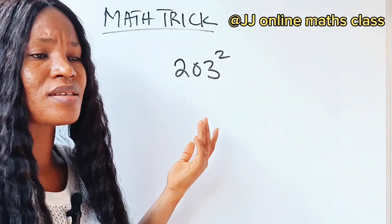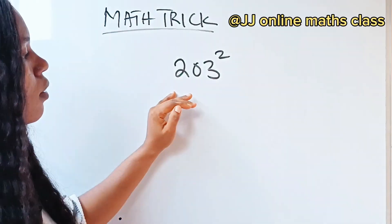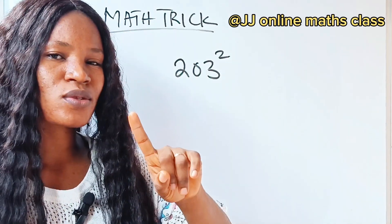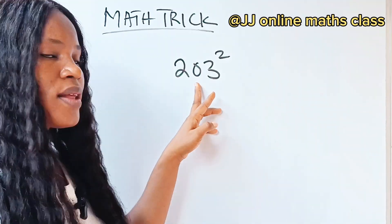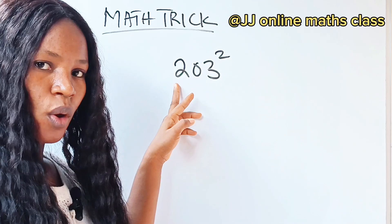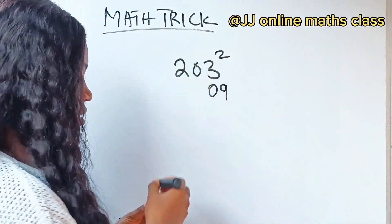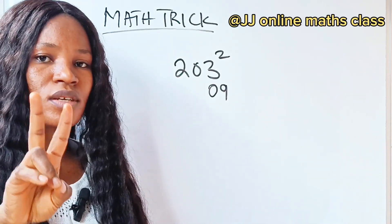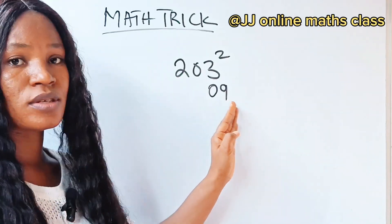If you missed that video, just check — it was my previous video before this. Now to solve 203 squared, let's start with the first method. We are going to square the first number, square the second number, and square the third number. Three squared is nine. Because it is a single digit number, we need it to be a two-digit number, so we add a zero to make it up. That's why I wrote zero nine.